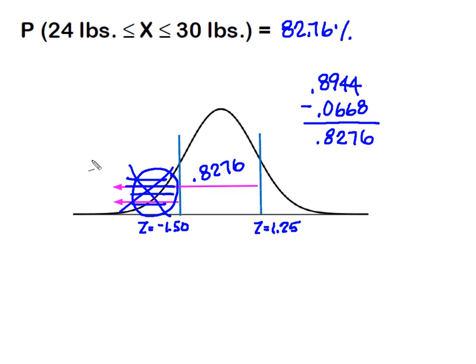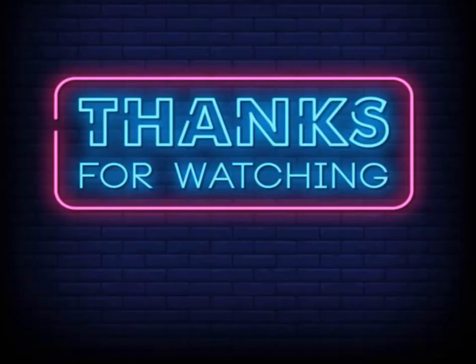So it will help you if you can visualize or sketch yourself a curve, and then you'll see immediately the area that was counted twice that you're going to have to subtract out in order to isolate just this area between these two points on the curve. As always, I hope that you found this useful and thanks so much for watching.